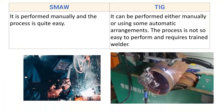Next point: SMAW is performed manually and the process is quite easy. The shielded metal arc welding process is generally performed manually and is also known as Manual Metal Arc welding. It is performed manually and the process is quite easy.